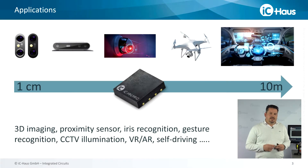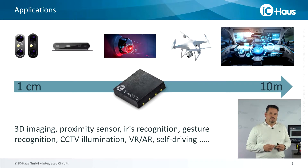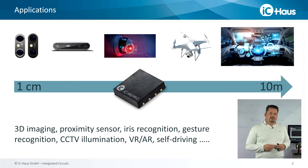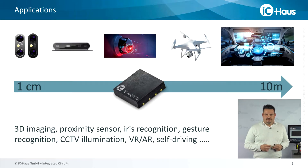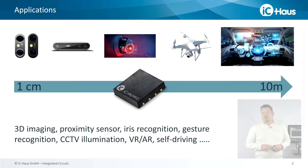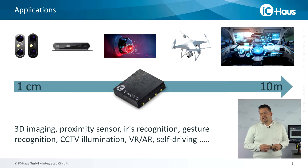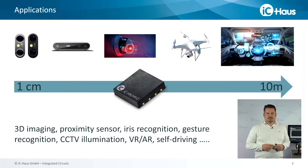Both ICHN and ICHN3 products are available in a small DFN8 3x3 mm package, and therefore is an ideal solution where limited installation space is required. The ICHN fits perfect mid to close detection range, which can be a few cm or up to 10 m distance.